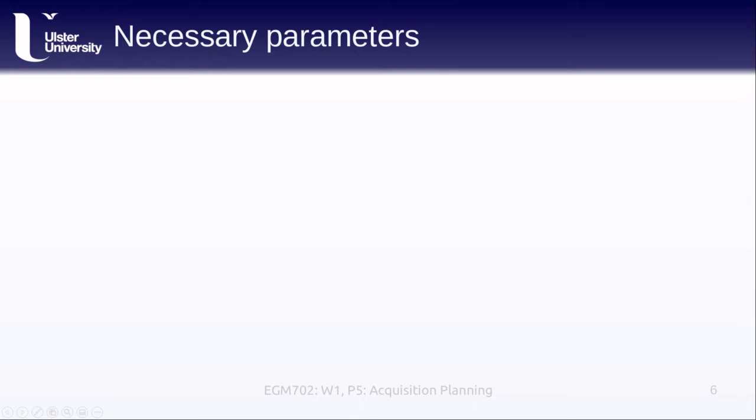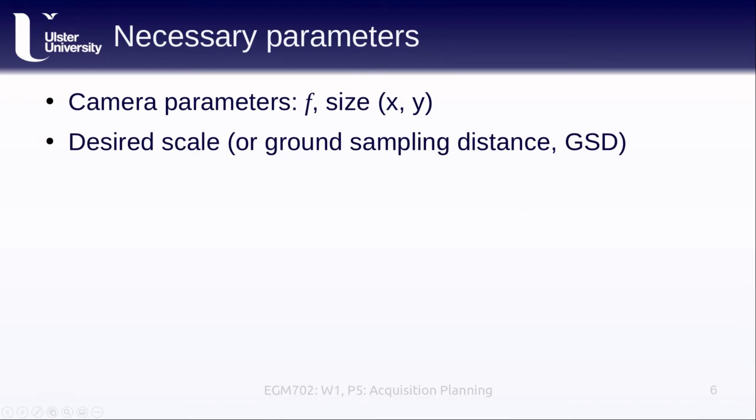In order to do our flight planning, we have some parameters that we need to know. The first of these is the focal length of the camera, f. We also need to know the size of the sensor or the size of the film. We also need to know what the scale is that we want to use. This can either be the scale expressed as, for example, one centimeter to one kilometer, or we can express this in the ground sampling distance. The example that I'll show in a moment uses the scale, but you can do the same calculations using your desired ground sampling distance, which, remember, is basically the pixel resolution on the ground.